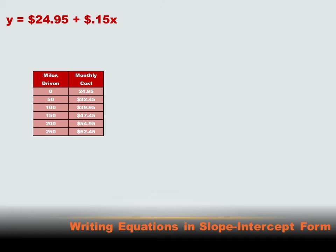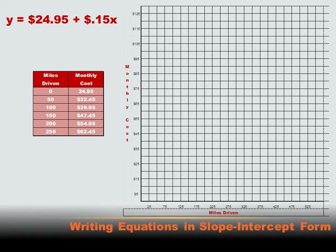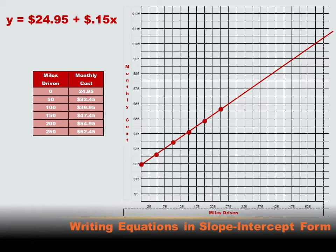It might be even better if I could put this in a graph. I'll put the miles driven along the X-axis — that makes sense since X represents miles — and the Y-axis shows the total monthly cost. Plotting the corresponding points: zero and $24.95, 50 miles at $32.45, 100 miles at just under $40 per month. When I plot the rest, it sure looks like I could draw a straight line right through all those points. And I've done that.